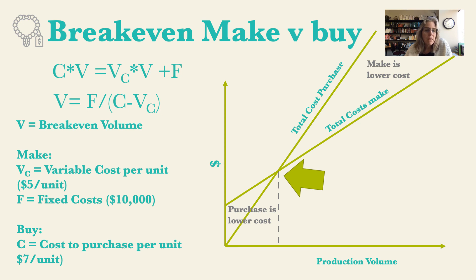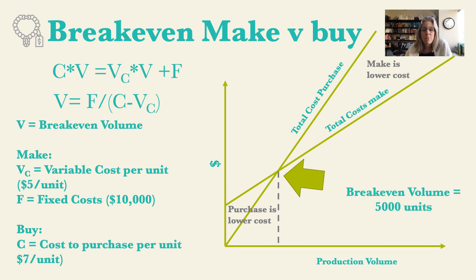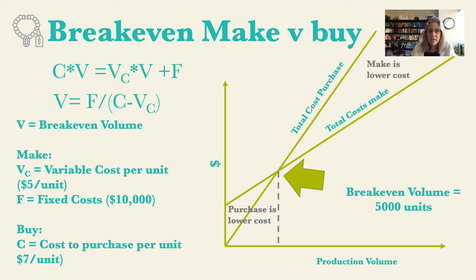For example, say the cost to make the item is a $10,000 fixed cost plus $5 per unit, while purchasing it costs $7 per unit. Plugging those into the equation gives a break-even volume of 5,000 units. If we plan to make or sell more than 5,000 units, it's better to make the product; below 5,000 units, it's better to purchase it.